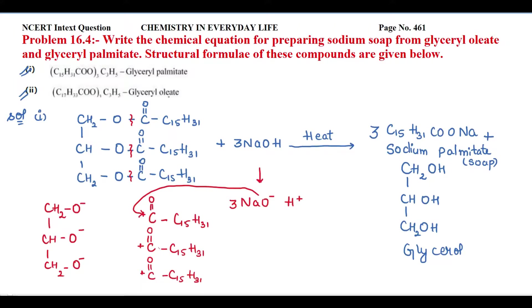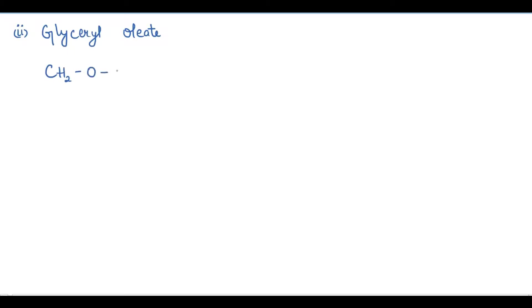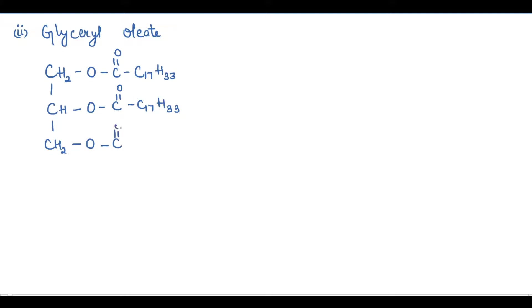Now let's look at the second compound — glyceryl oleate. The structural formula of glyceryl oleate is: CH₂–O–C(=O)–C₁₇H₃₃, CH–O–C(=O)–C₁₇H₃₃, and CH₂–O–C(=O)–C₁₇H₃₃.